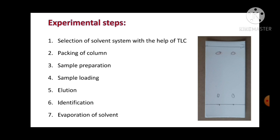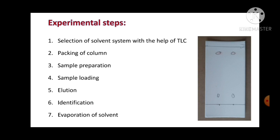In the TLC step, we spotted the mixture on the baseline and got two spots on the TLC plate. We used the solvent system ethanol and distilled water at a ratio of 9:1 — 9 ml ethanol and 1 ml distilled water. The red ink showed a higher RF value and the blue ink was at the bottom. With this system selected, we can now pack the column.